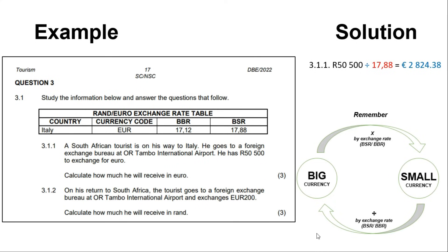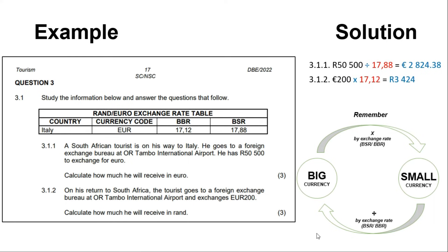For question 3.1.2: he has 200 euros, so we take 200 and multiply by 17.12 — which is the BBR rate on the table. This tells us the financial institution is buying currency from the tourist. The answer is 3,428 rands — that is how much he will receive after converting 200 euros back to South African rands.